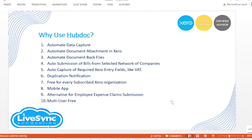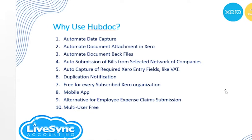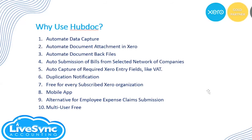Let's cover the reasons why HubDoc is advantageous as an accountant or Xero subscriber. The primary function is to automate data capture — it captures automatically from paper or electronic documents to Xero. When capturing a supplier for the first time, you set up default information so subsequent documents auto-populate text fields and forward to Xero. You can choose whether to send documents as draft or as awaiting payment — an approved status document in Xero.